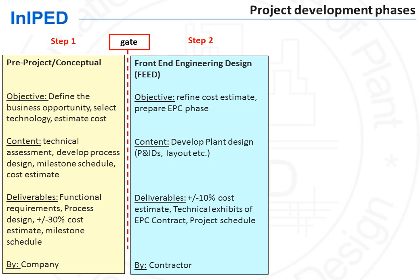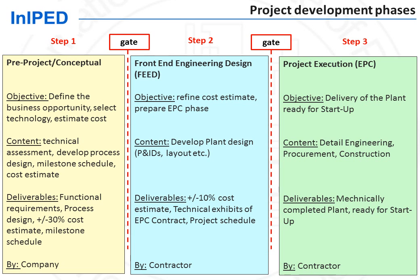At this stage, the plant design is developed to a rather high level of detail, which will allow — should the investment decision be taken — to move to the next step, which will be step three: the project execution stage. This will normally be contracted by the client, the oil and gas company, to a contractor under a fixed-price project contract, called a lump-sum turnkey contract. At this stage of step three, the company has entered into a contract with a contractor for which it will get a turnkey plant for a fixed price and for a determined delay.